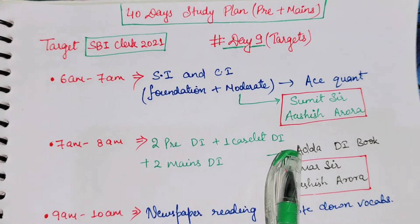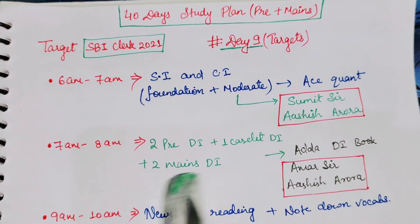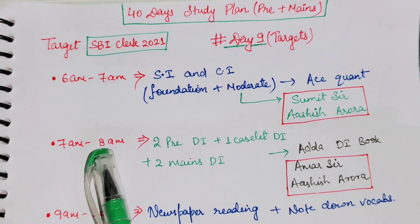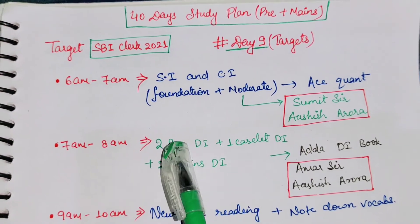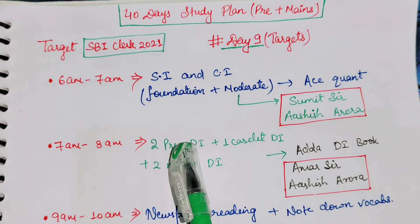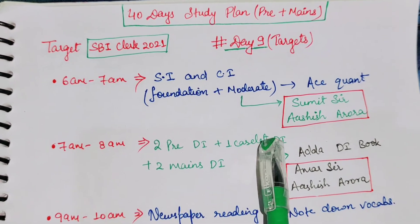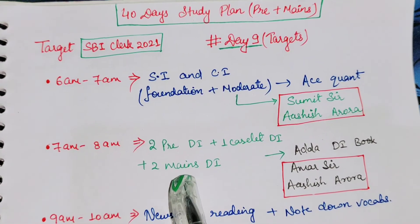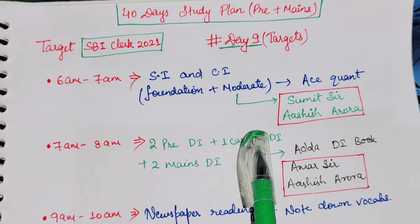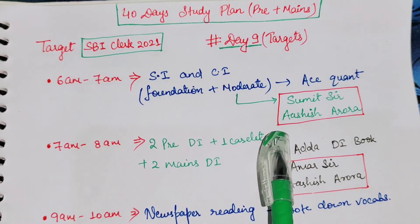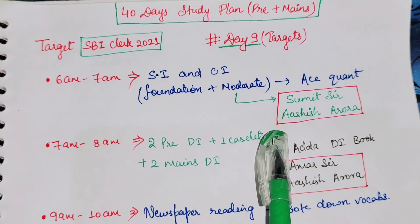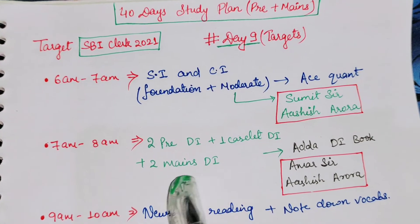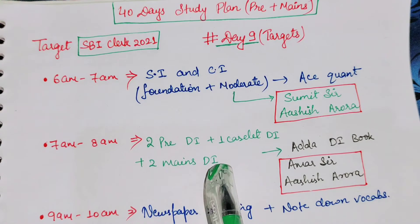From 7 AM to 8 AM today, you have to do pre-level DI, plus one caselet DI, plus two mains-level DI. You have 1 hour — about 20 minutes for pre-level DI plus one caselet DI (roughly 10 to 15 minutes each), and then 40 minutes to complete two mains-level DI sets.